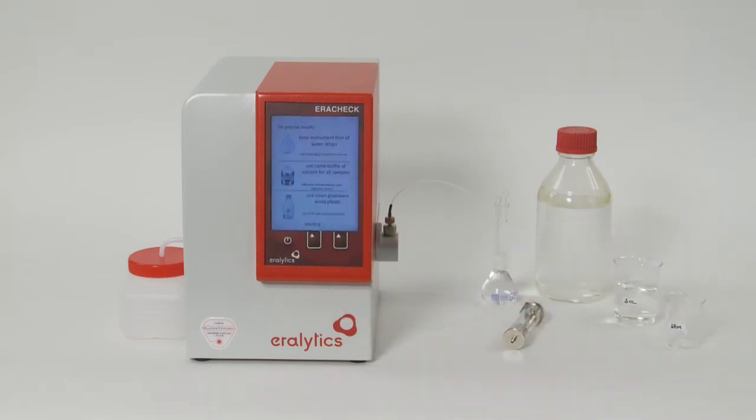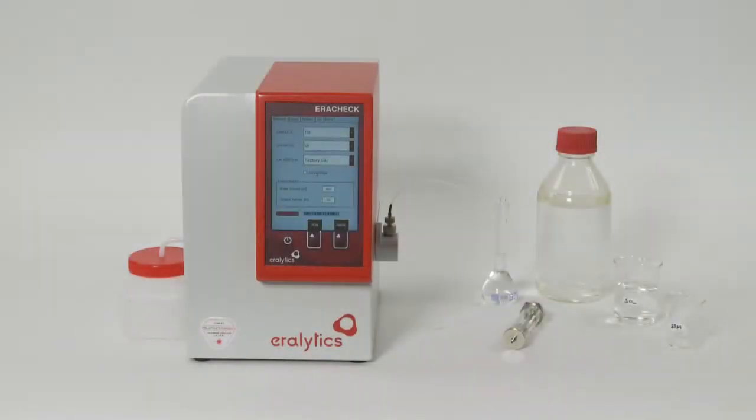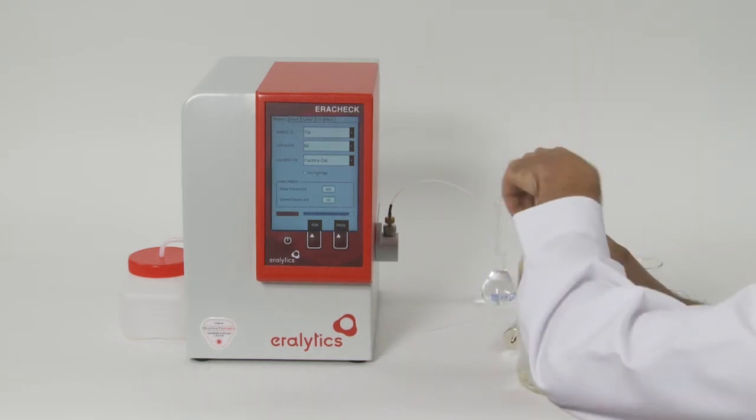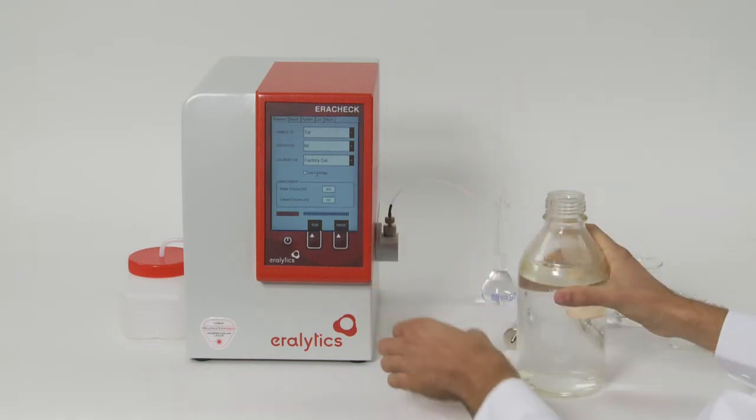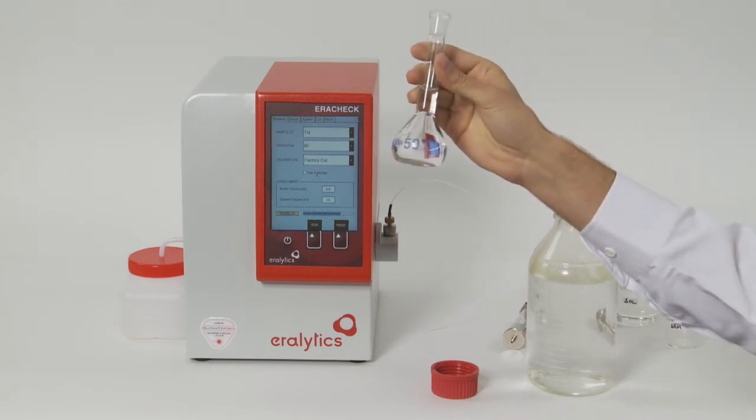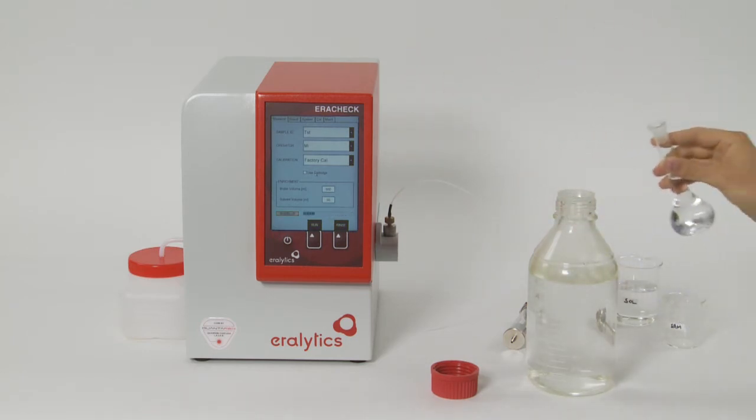Measurements. In the first step of the measuring procedure, the hydrocarbons are extracted from the water sample. This is done by a liquid-to-liquid extraction using cyclohexane or cyclopentane as a solvent. We recommend collecting 900 milliliters of water sample into a glass bottle with PTFE cap. Prepare 50 milliliters of solvent in a volumetric flask and pour it into the sample bottle.